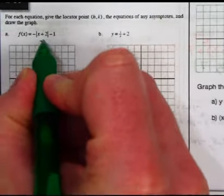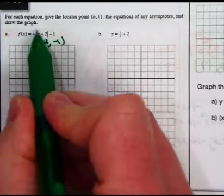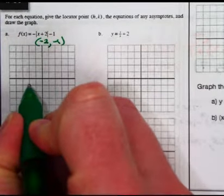So the locator, this generates is a negative 2, this generates a negative 1. So my vertex of my absolute value graph, because I have absolute value bars, is going to be at negative 2, negative 1, and I can put the point.